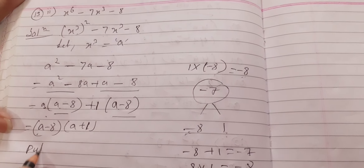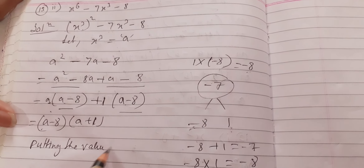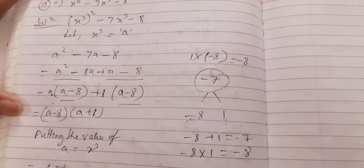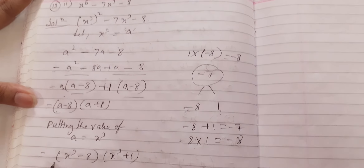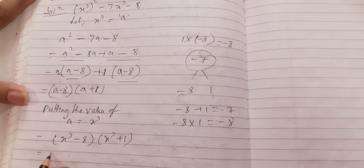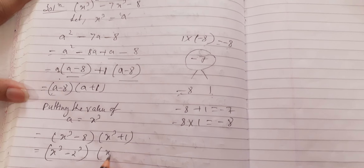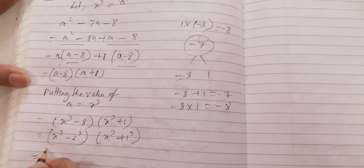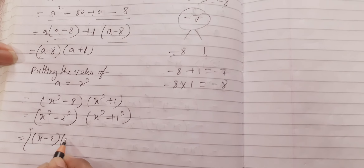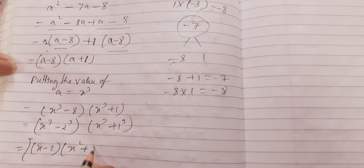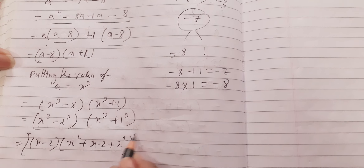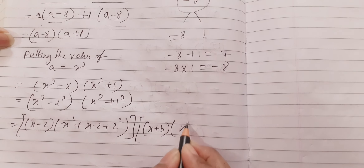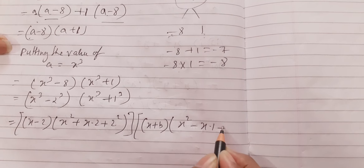Now putting back the value of a, which is x³, our equation becomes (x³ - 8)(x³ + 1). We use the a³ minus b³ formula for the first bracket, writing x³ - 2³. And for the second bracket x³ + 1³, we use a³ + b³ formula. So we write (a - b)(a² + ab + b²) for the first, and (a + b)(a² - ab + b²) for the second.